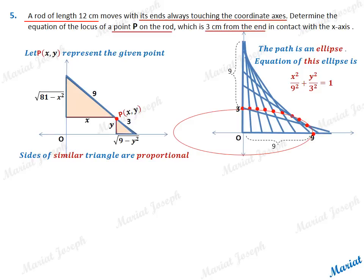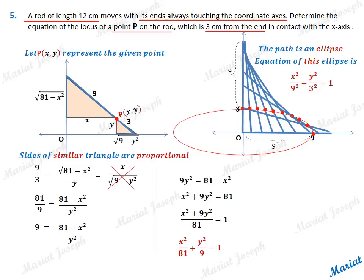Using this concept, take the sides: root of 81 minus x squared upon y equals 9 upon 3, which equals x upon root of 9 minus y squared.